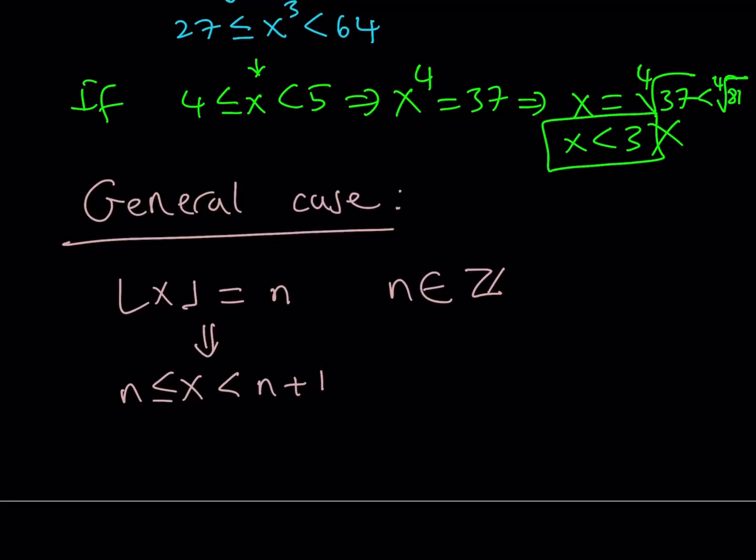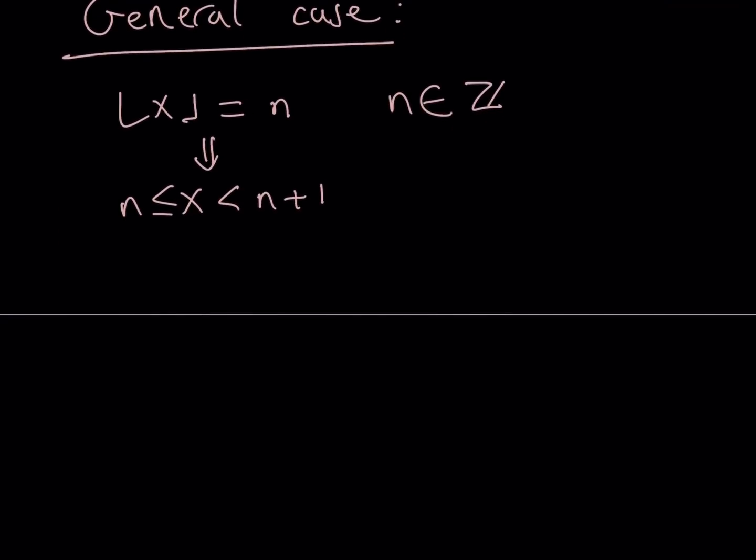So if our floor value is equal to n, n being an integer, then we get x to the power n is equal to 37, which implies that x is equal to the nth root of 37. Again, n is a positive integer. I'm only considering the positive solution here. Now let's go ahead and raise both sides, or everything, I should say, to the nth power.